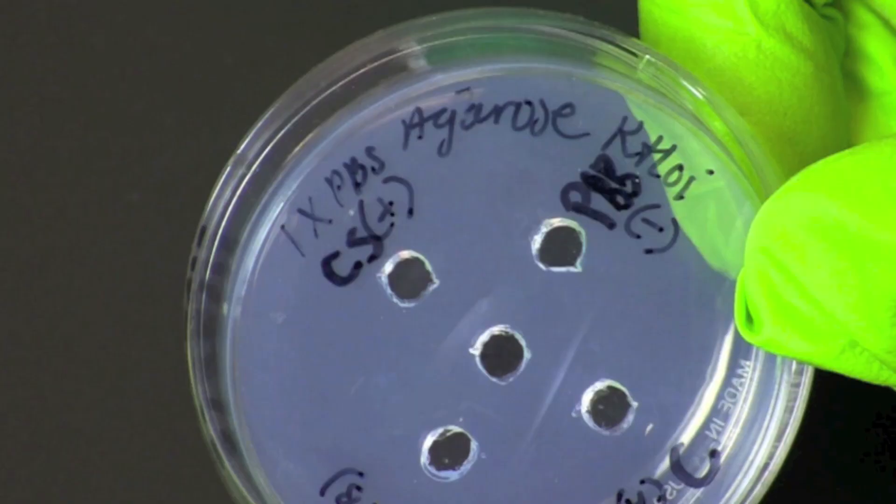Cover the petri plates and incubate at room temperature for 24 to 72 hours. Keep the plate right side up.